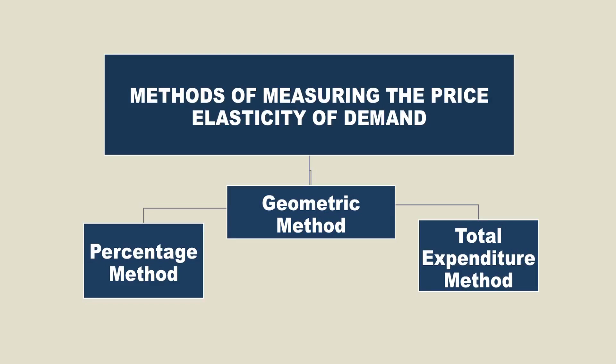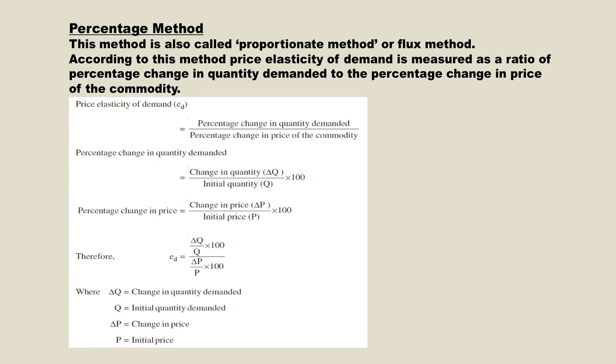Now we come to how to measure elasticity of demand. There are three different methods: the percentage method, geometric method, and total expenditure method. According to the percentage method, price elasticity of demand is measured as the ratio of the percentage change in quantity demanded to the percentage change in price of the commodity. Percentage change in quantity demanded equals change in quantity demanded divided by initial quantity demanded, multiplied by 100. Percentage change in price equals change in price divided by initial price, multiplied by 100.